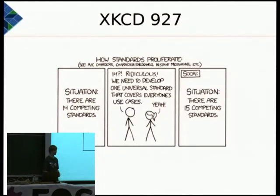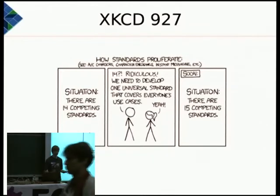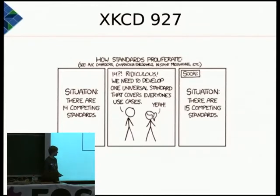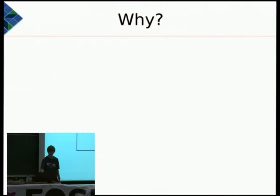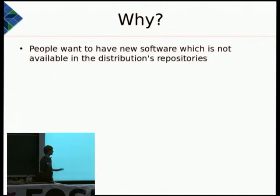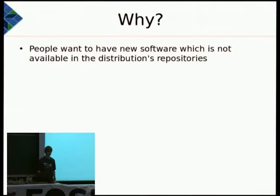So first of all, you might know this: we created with some others a cross-distribution packaging system, but we already have packaging systems in each distribution. The main reason we need a cross-distribution installation system is that people want new software not available in their distributions. They have a stable base distribution and want the latest software, but rolling release distributions don't fit everyone's use case.